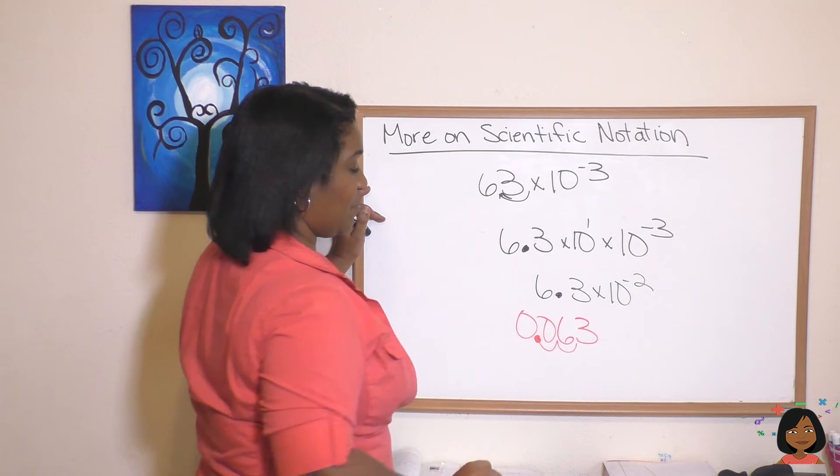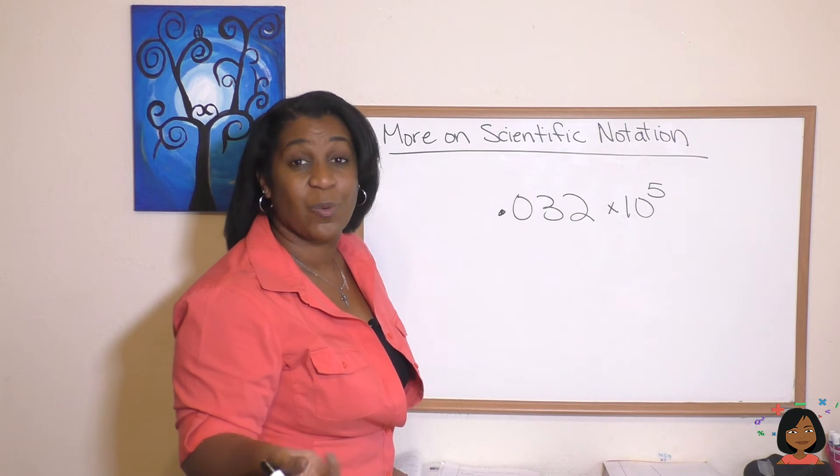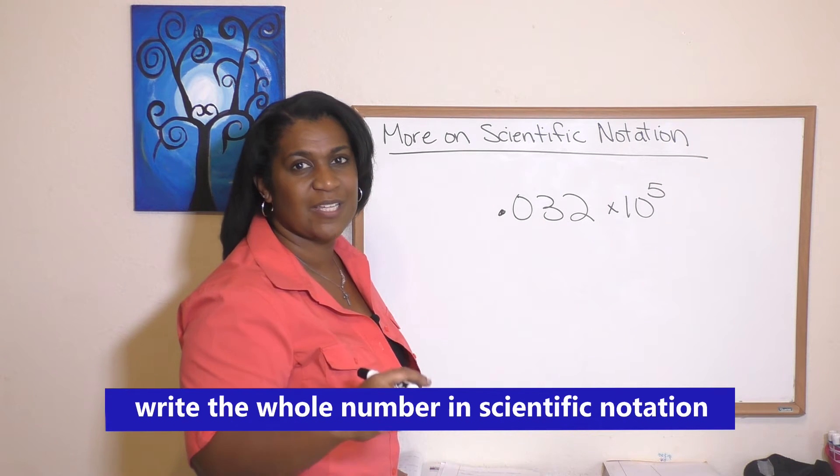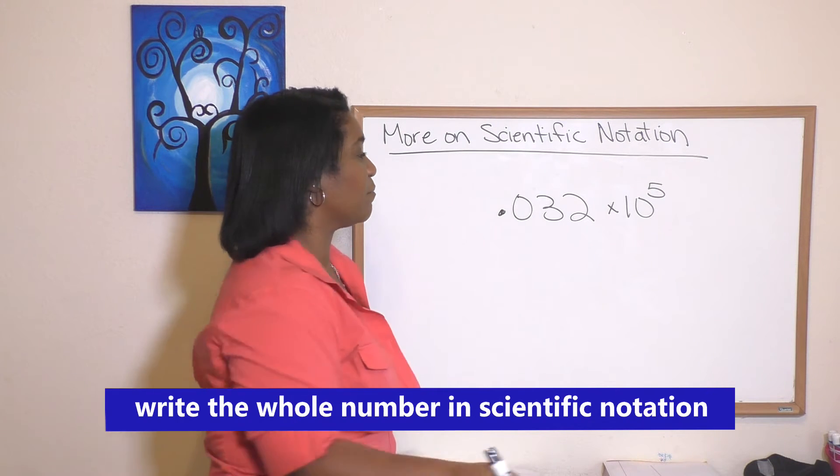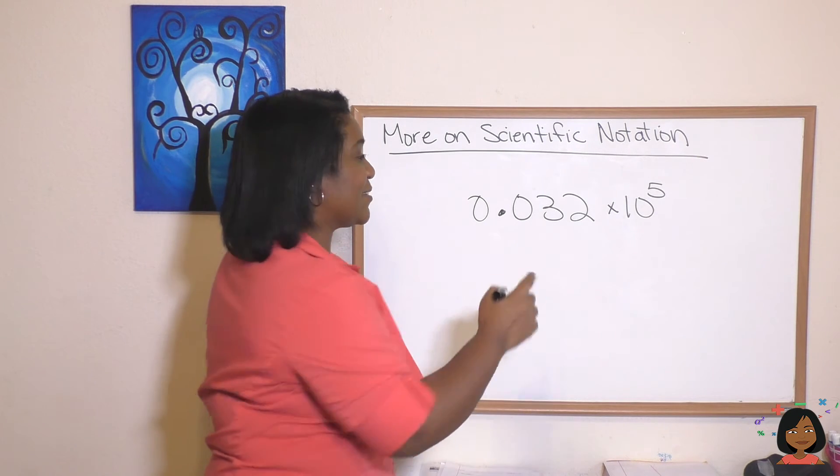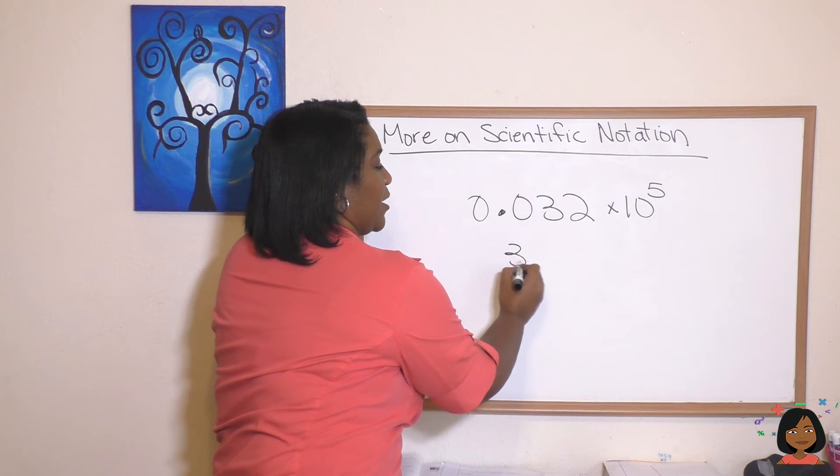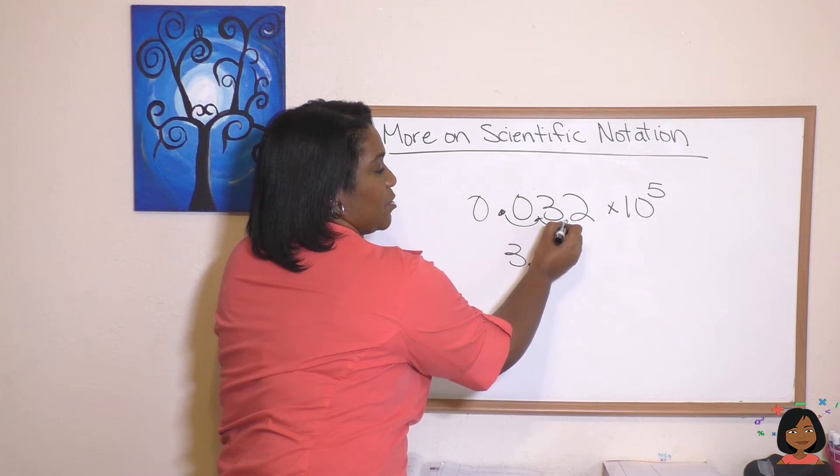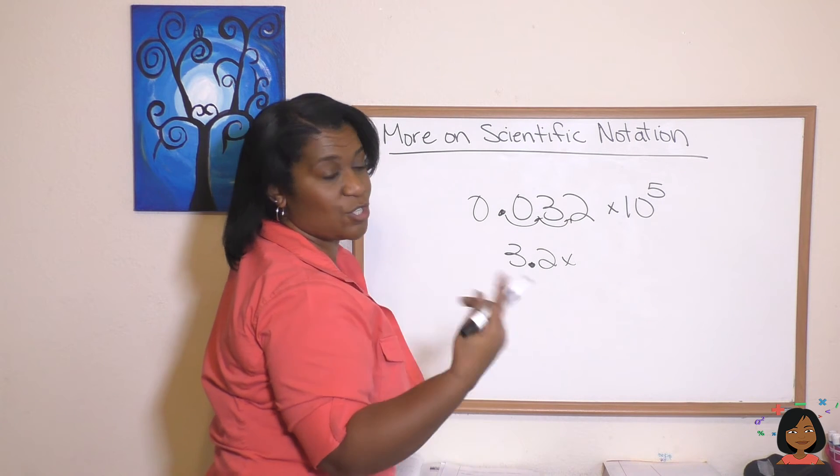What happens if they give it to us in a decimal format? Same thing applies. Put it into its scientific notation form. 0.032—we know that's the same thing as saying 3.2 times—one, two—we're going to move our decimal places two places to the right, which means it's going to be ten to the negative two, and now multiply that ten to the fifth.